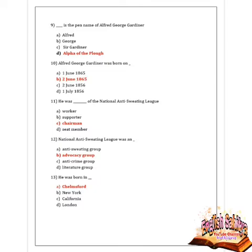Next question: Alfred George Gardiner was born on what date? Given options are 1st June 1865, 2nd June 1865, 2nd June 1856, and 1st July 1856. Option B is correct — 2nd June 1865 was the date of birth of Alfred George Gardiner.